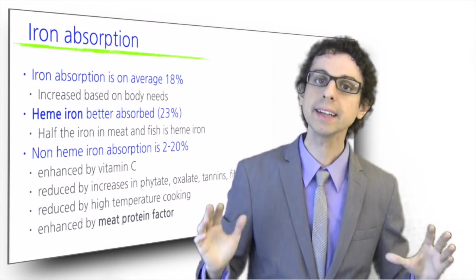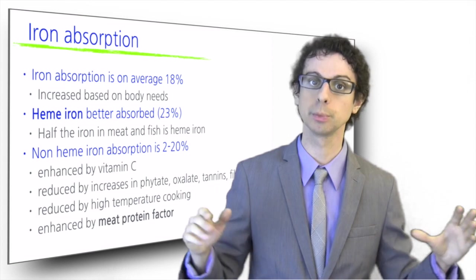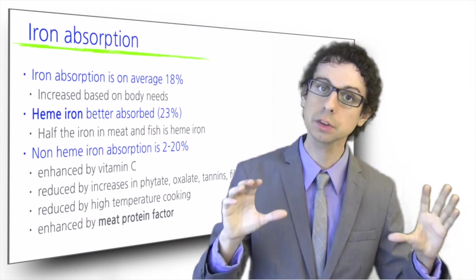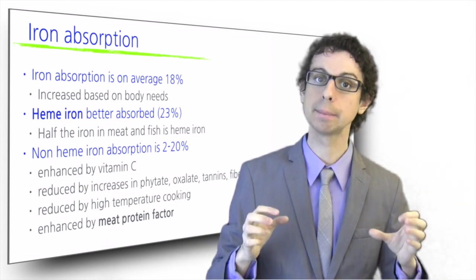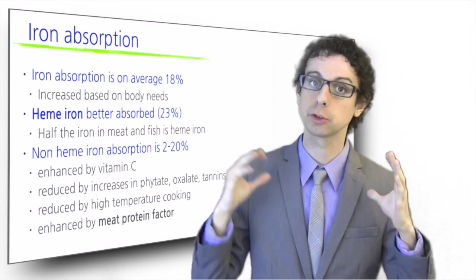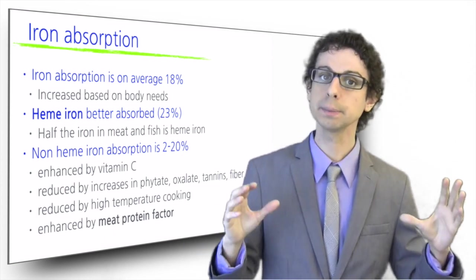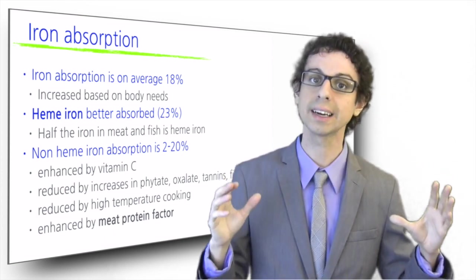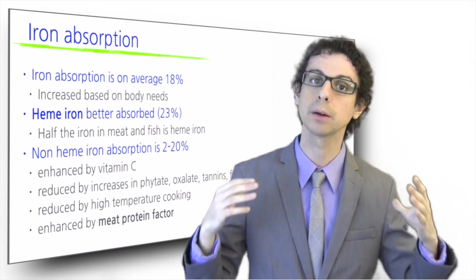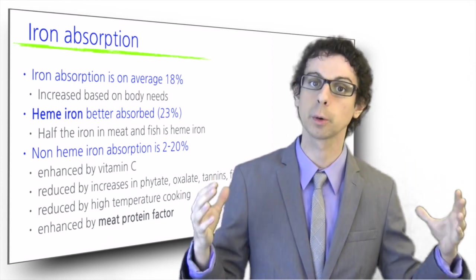Vitamin C greatly enhances iron absorption both by keeping it in its reduced state and by directly binding it so they can be absorbed together. A few sips of orange juice provide enough vitamin C to double the amount of non-heme iron absorbed from a meal.